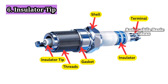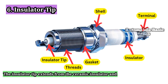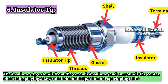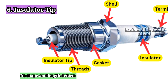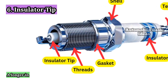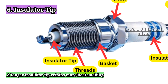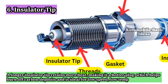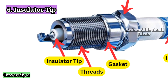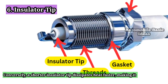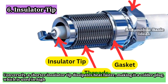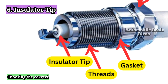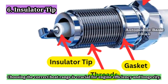6. Insulator Tip. The insulator tip extends from the ceramic insulator and surrounds the center electrode, playing a key role in heat dissipation and spark plug self-cleaning. Its shape and length determine the heat range of the spark plug. A longer insulator tip retains more heat, making it a hotter plug, which helps burn off carbon deposits and is ideal for low-speed, low-temperature engines. Conversely, a shorter insulator tip dissipates heat faster, making it a colder plug, which is used in high-performance engines to prevent pre-ignition and detonation. Choosing the correct heat range is crucial for engine efficiency and longevity.